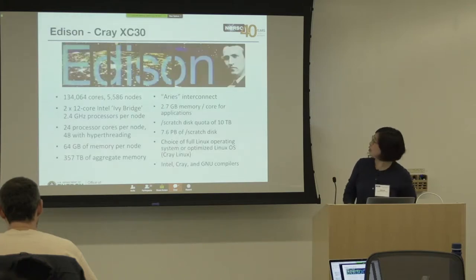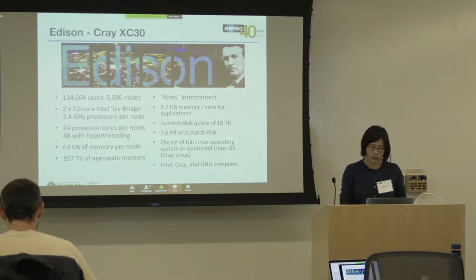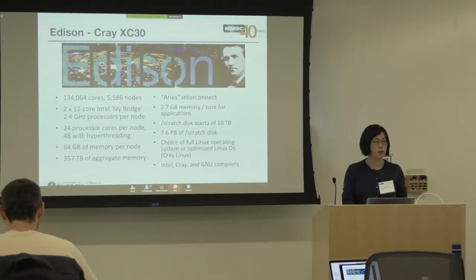Edison has more than 5,000 nodes. Each node has two sockets, and each socket has a 12-core Intel Ivy Bridge processor. Memory-wise, each core has about 2.7 gigabytes of memory. There are also details about scratch disks and so on. It's a large production system.